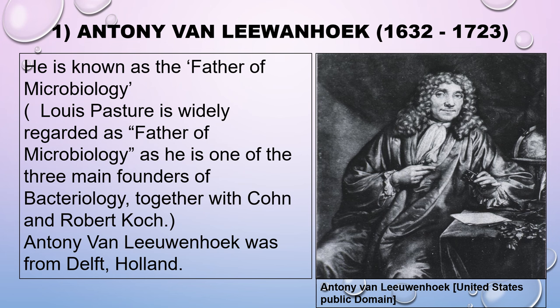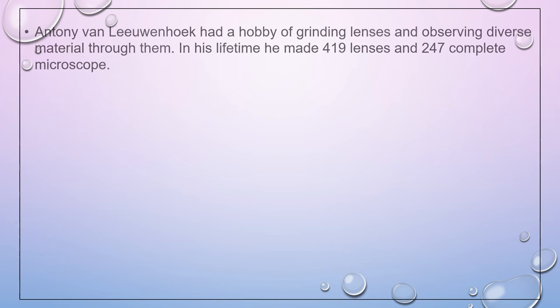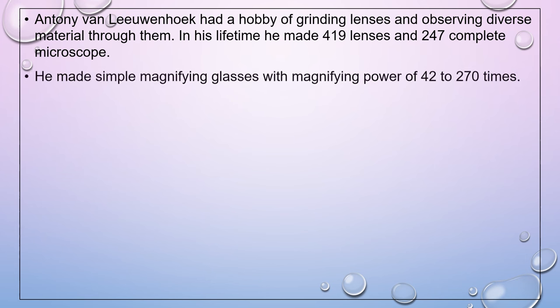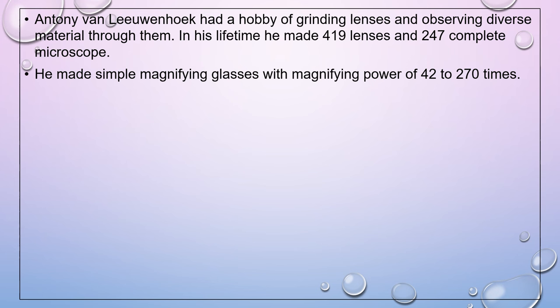Antony Van Leeuwenhoek was from Delft, Holland. He had a hobby of grinding lenses and observing diverse materials through them. In his lifetime, he made 419 lenses and 247 complete microscopes, with simple magnifying glasses having a magnifying power of 42 to 270 times.